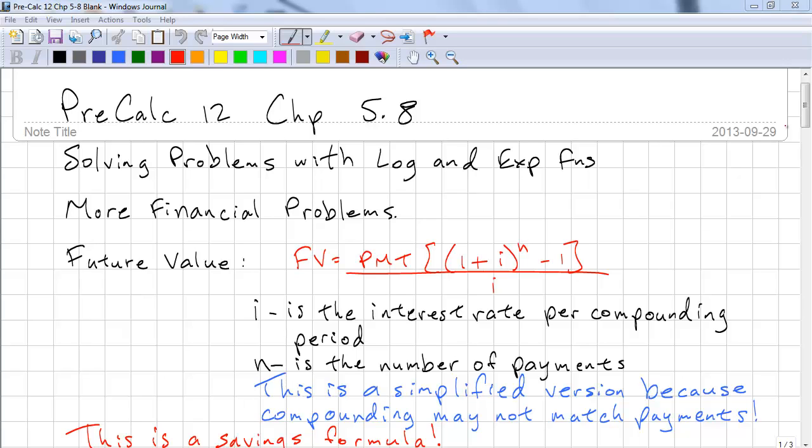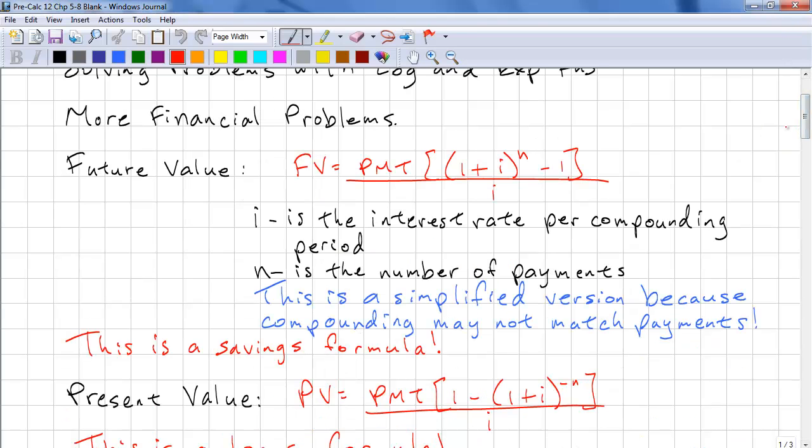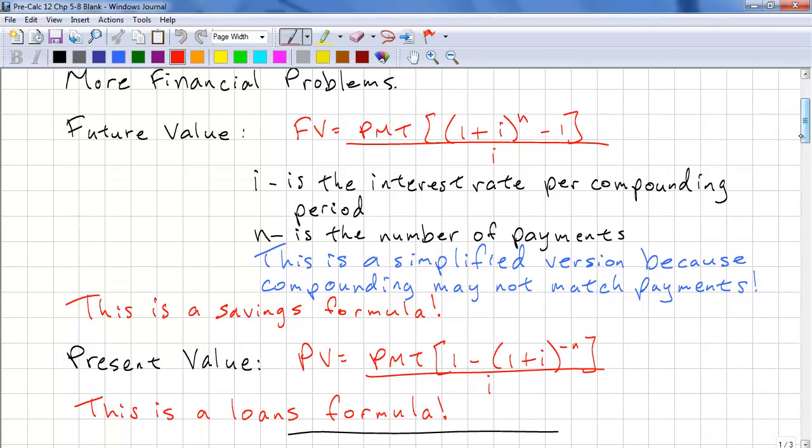We're going to look at some financial problems. This is slightly more difficult because we have regular payments or deposits. The first formula is called future value. It's payment times 1 plus i in brackets to the power of n minus 1, all divided by i.